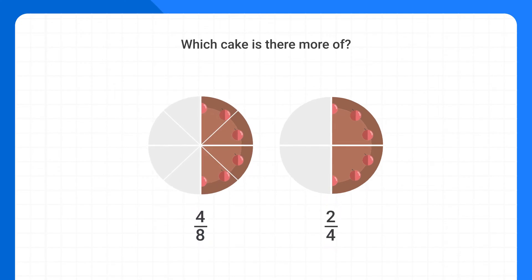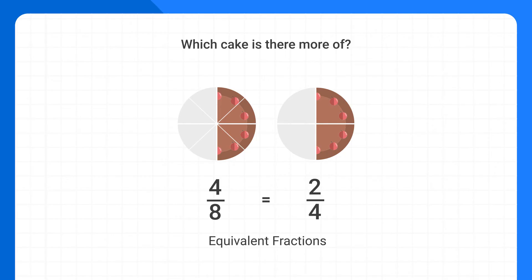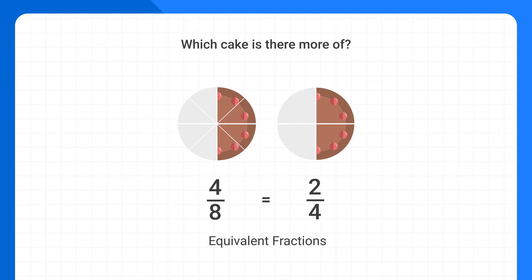Well, these represent what we call equivalent fractions. Equivalent fractions are ones that are written differently but are actually equal. 4 eighths is written differently than 2 fourths, but both fractions are equal because they represent the same amount of cake. We could write as a number sentence that 4 eighths is equal to 2 fourths. An easy way to remember this is if you look at the word equivalent, you can see the word equal inside of it. Equivalent fractions are fractions that are equal.